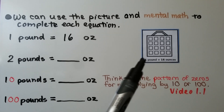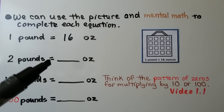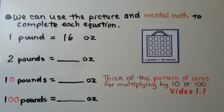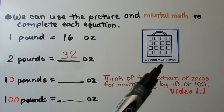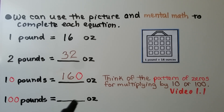We can use the picture and mental math to complete each equation. One pound equals sixteen ounces. Two pounds equals two times sixteen, which is thirty-two ounces. Ten pounds: sixteen times ten gives a sixteen with a zero at the end — one hundred sixty ounces. One hundred pounds: sixteen times one hundred gives a sixteen with two zeros — one thousand six hundred ounces.